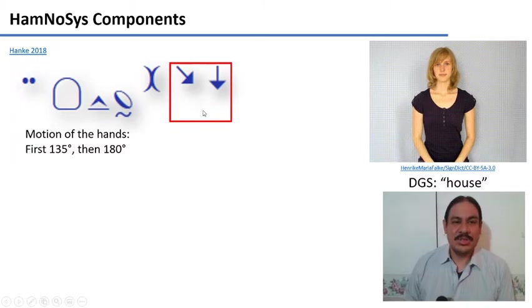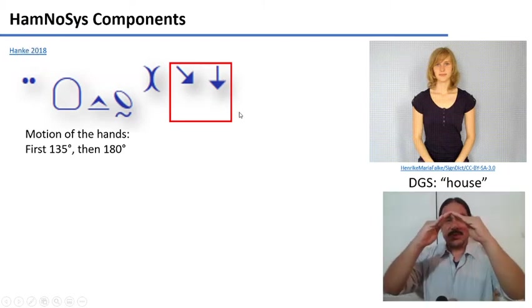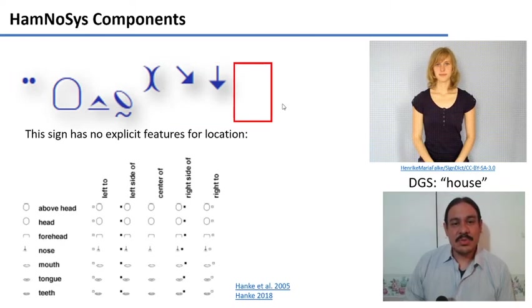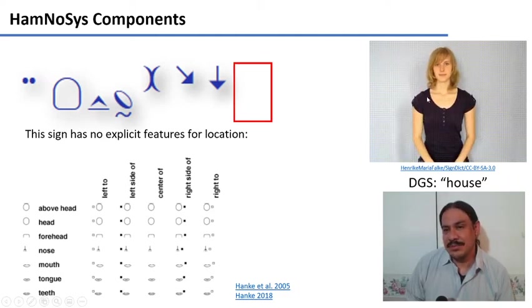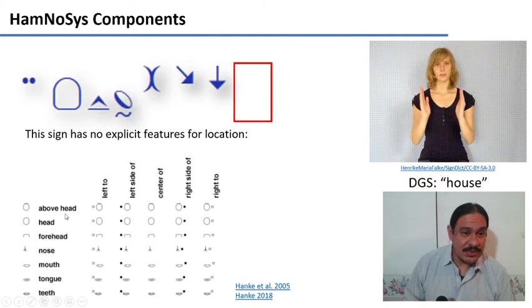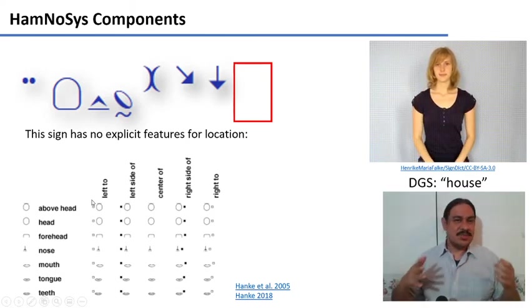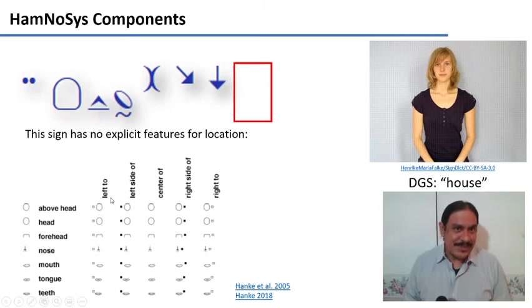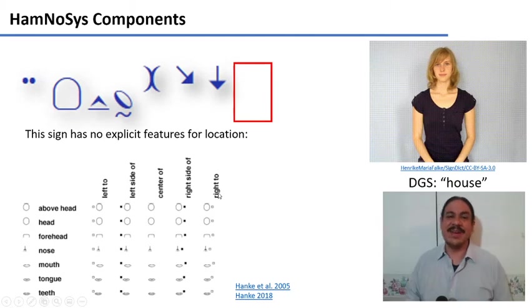We have the motion of the hands, which go from this motion of 135 degrees and then turn downwards to 180. The transcription has no explicit features for the location because it's set in the general location. It could have an additional description if it was made above the head, for example, or on your forehead or around your teeth. It also has descriptions for different parts of your torso. And as you can see, you can specify a lot of narrow transcription of whether it's left of your forehead or right to your forehead and so forth.